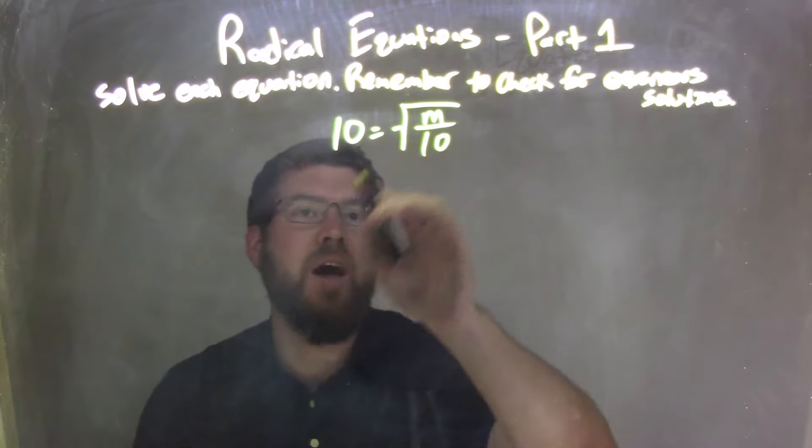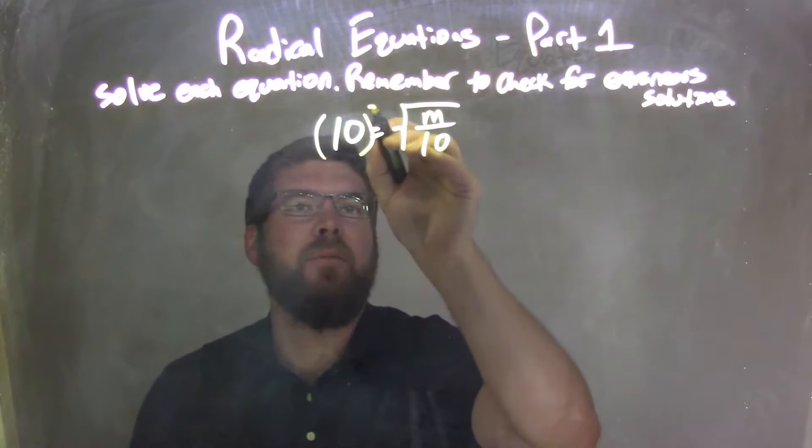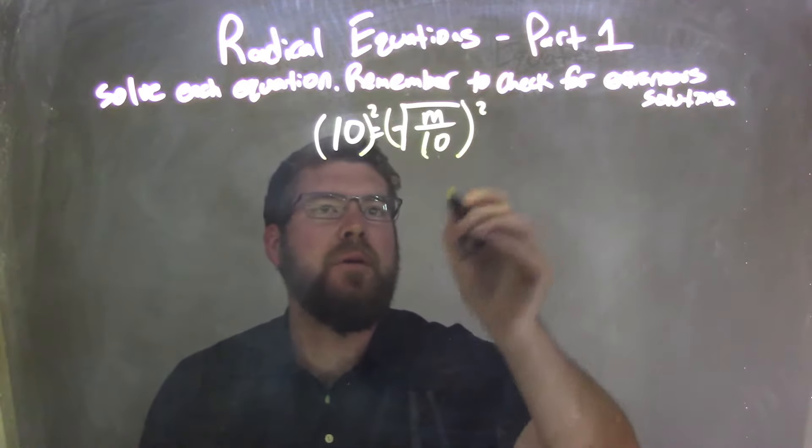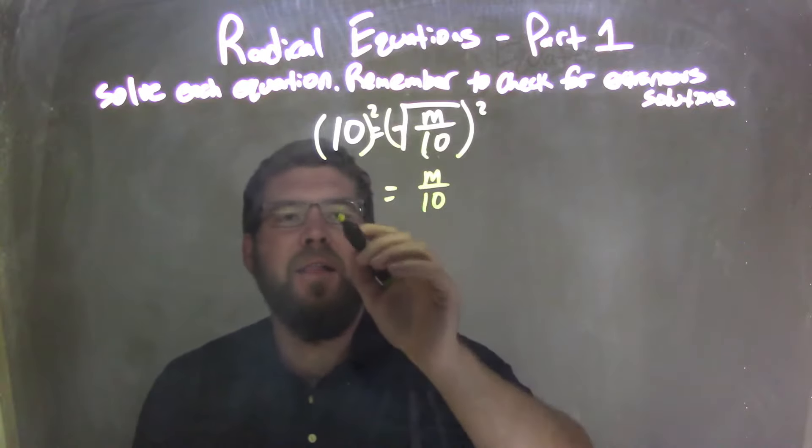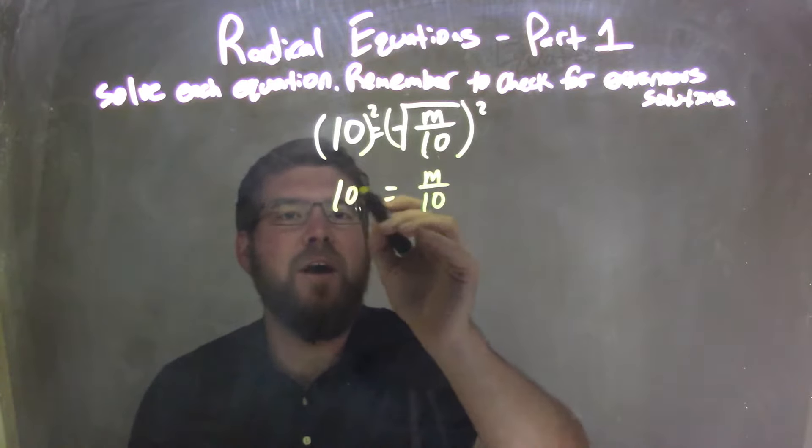I'm going to square both sides. So by squaring both sides here, it eliminates the square root on the right, leaving me with m over 10 here. And on the left, I have 10 squared, which is 100.